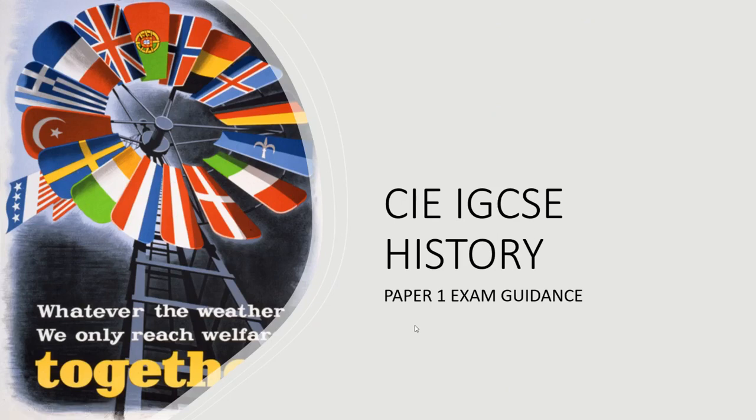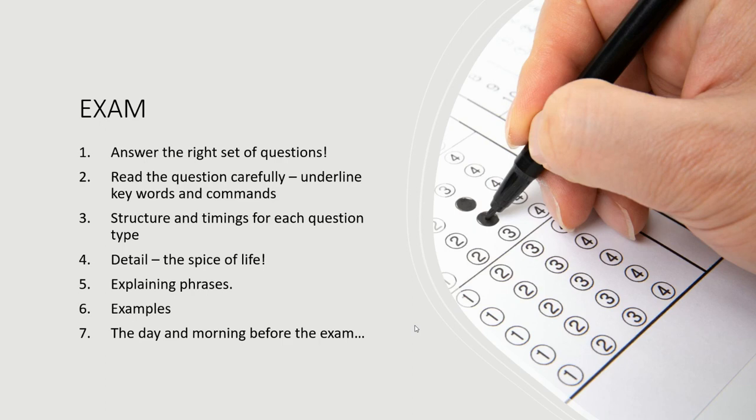Okay guys, I'm just going to record a short video for you here to talk you through paper one of the IGCSE exam. I know we've been through it a thousand times before, but I thought I'd just do one last run through before your final exam. So we are going to talk about a number of things: firstly making sure you answer the right questions, that you read the question carefully, that you're confident with the structure and timings for each question, that you are aware that you must include detail. Some example explaining phrases to make sure you're getting up to the higher level responses, and then we go through a few examples, and then there's a few last minute tips for the day.